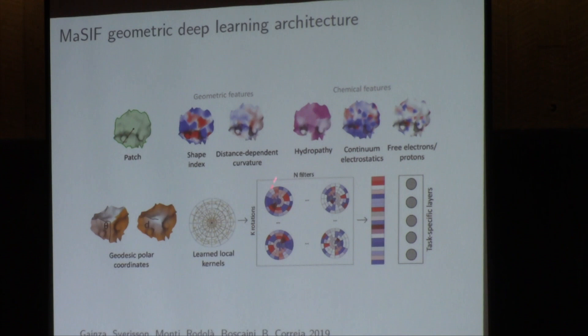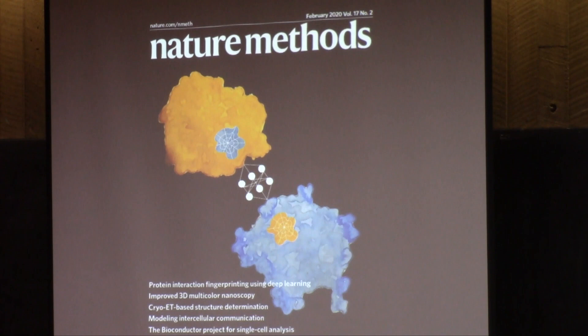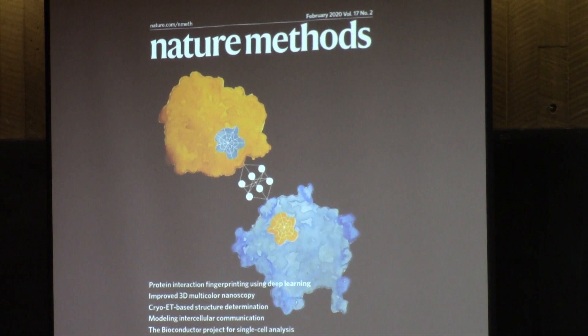This is a somewhat poetic visualization of how it works, which we were lucky enough to get on the cover of Nature Methods this February. You can see a pair of proteins, the small patches, and the neural network. That visualization was done by a friend who does watercolor painting after we were let down by two illustrators — and somehow it got onto the cover of Nature.